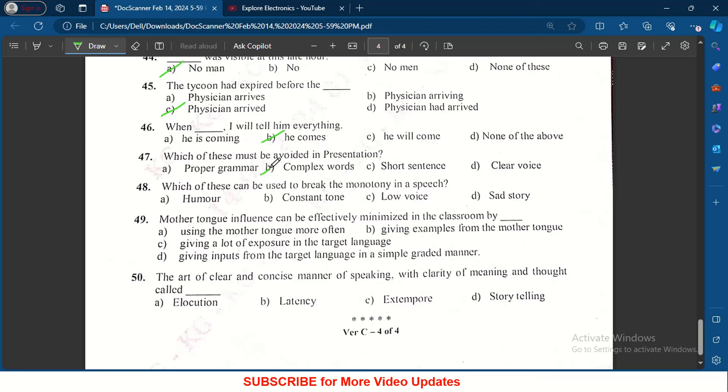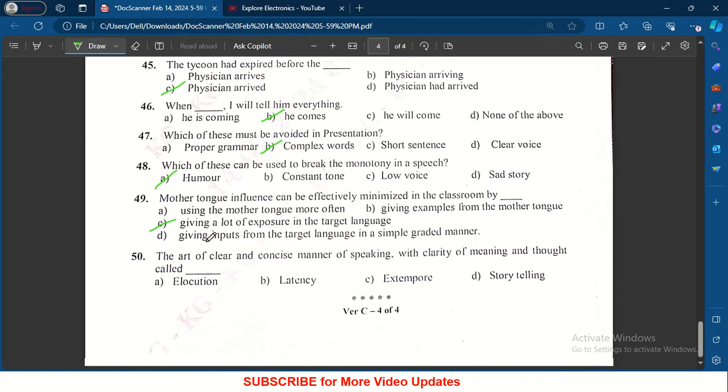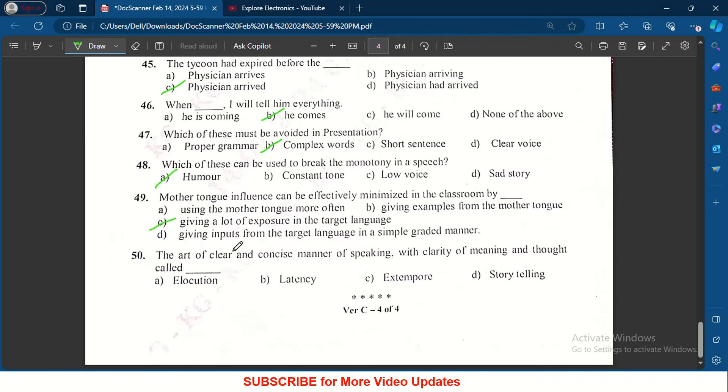Which of these must be avoided in presentation? Minute, wide, complex words. Which of these can be used to break the monotony in a speech? Humor can be used. Mother tongue influence can be effectively minimized in the classroom by giving lot of exposure in the target language. The art of clear and concise manner of speaking with clarity of meaning and thought is called elocution. So these are the probable answers below, thanks.